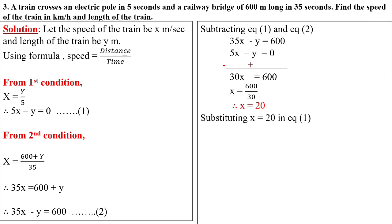Substituting x equals 20 in equation number one, which is 5x minus y equals 0. We substitute the value: 5 multiply by 20 minus y equals 0, so 100 minus y equals 0. Therefore y equals 100.